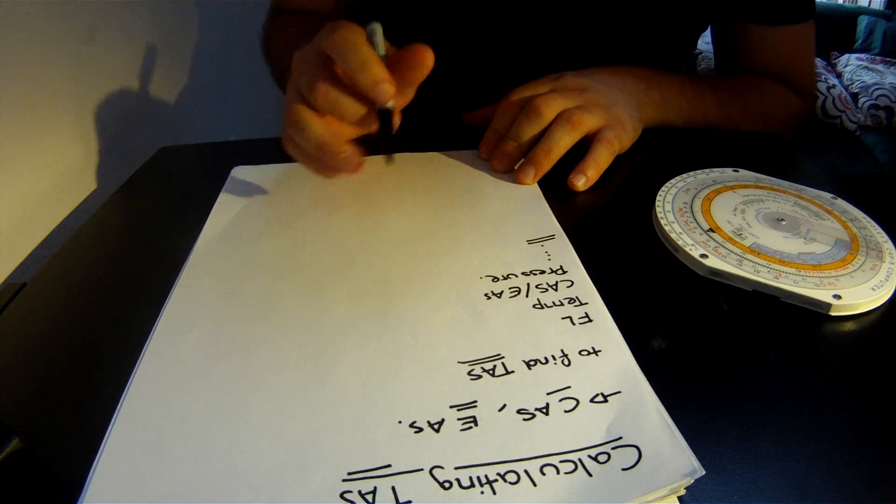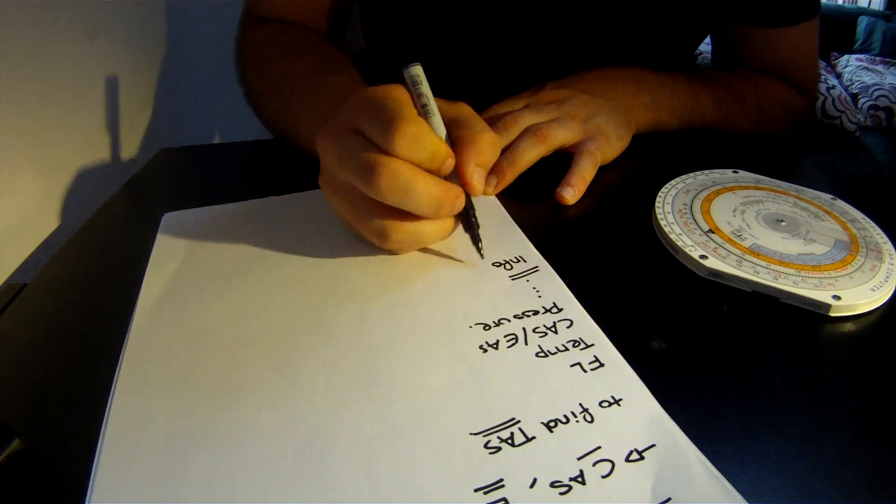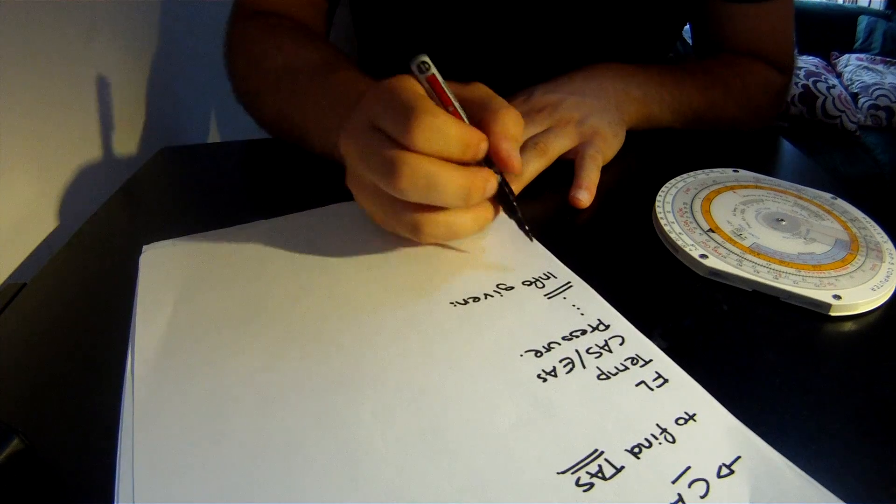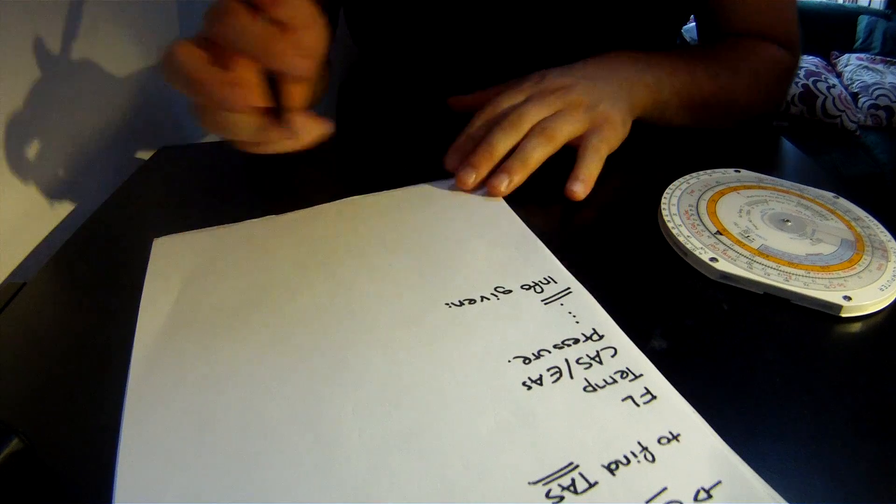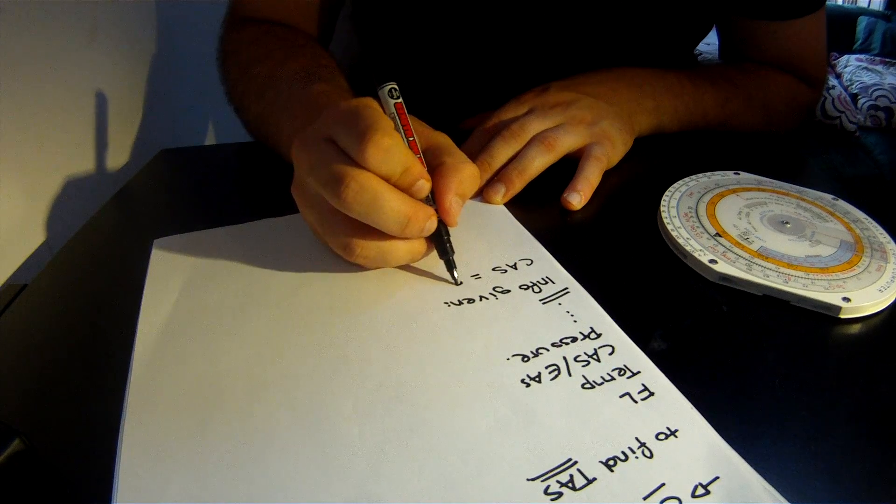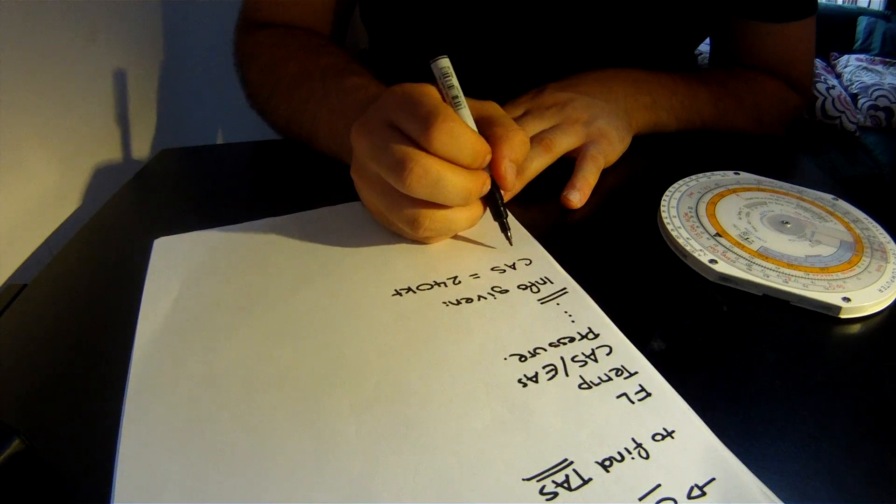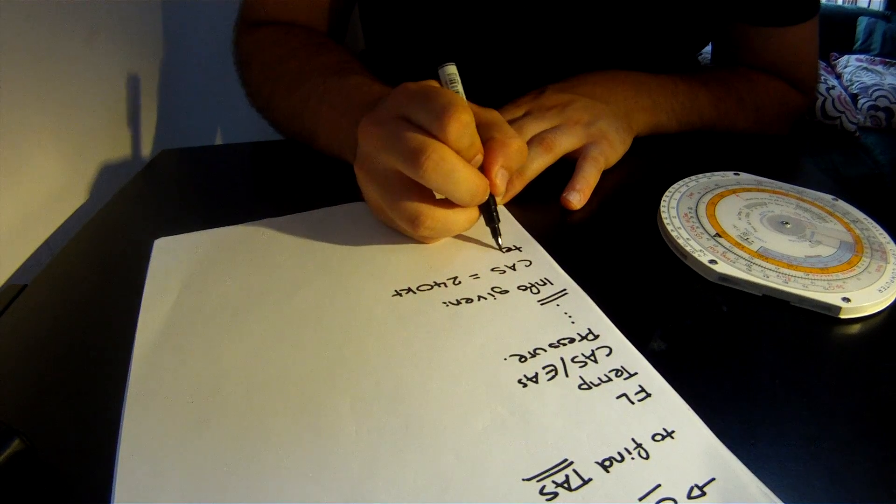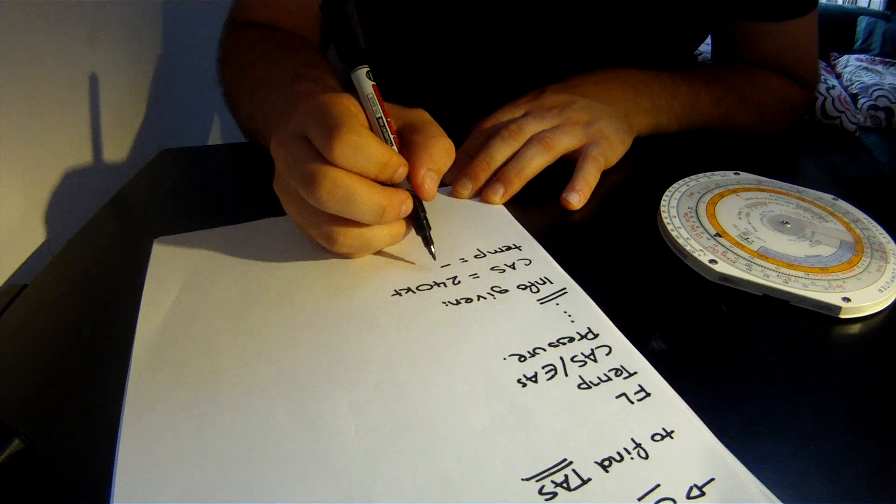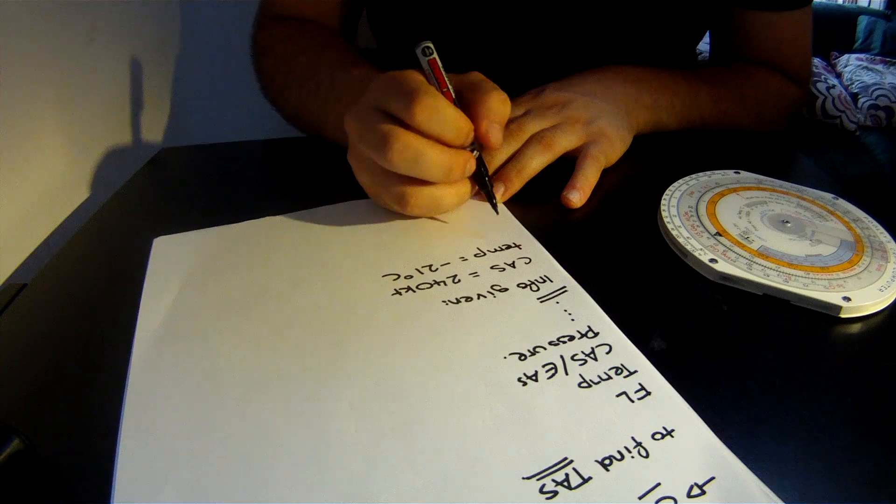Let's do an example so you can see what I mean. Let's say the information given is that CAS equals 240 knots, and the temperature outside equals minus 21 degrees Celsius.